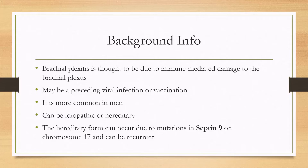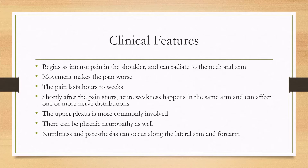In the hereditary form, there is a mutation in septin 9 that occurs on chromosome 17, and the symptoms there can be recurrent.